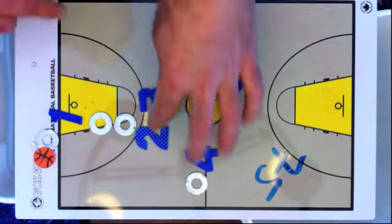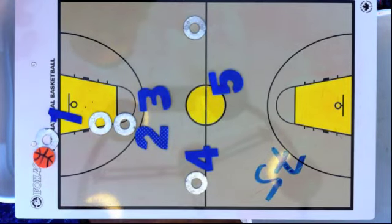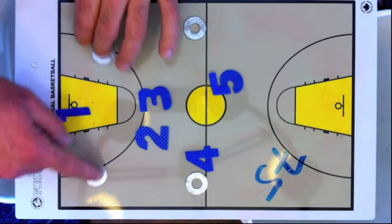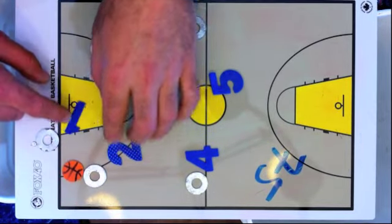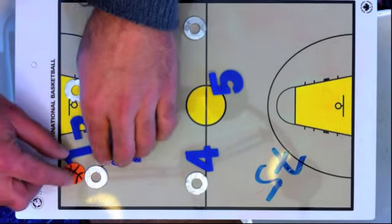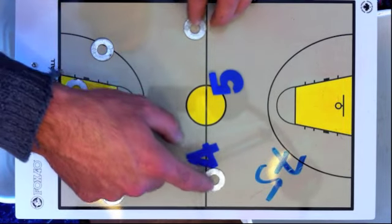Right now, the numbers are on defense, and the circles are going to be running our press break. The ball goes to the corner, and immediately this guy follows the pass, and three has to step in to stop the release pass. If you guys remember, we have something like this.